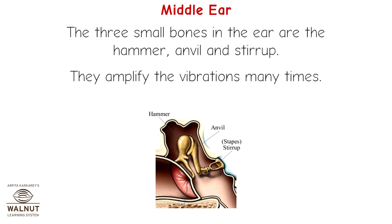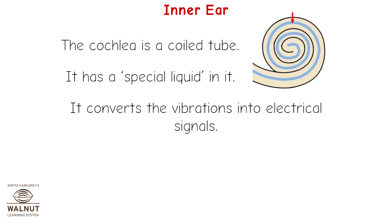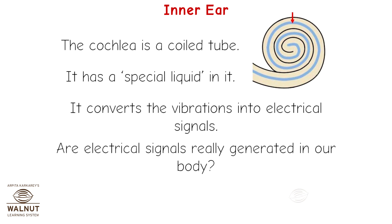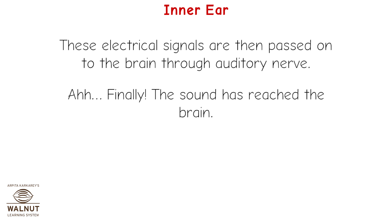This amplified sound goes to the inner ear. The inner ear consists of the cochlea and the auditory nerve. The cochlea is a coiled tube with a special liquid in it; it converts the vibrations into electrical signals. Yes, electrical signals are really generated in our body! These electrical signals are then passed on to the brain through the auditory nerve.